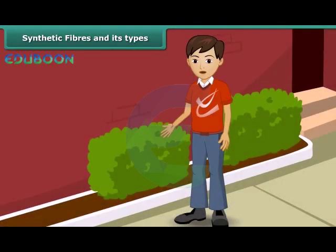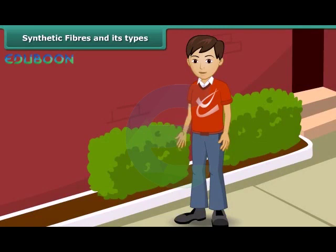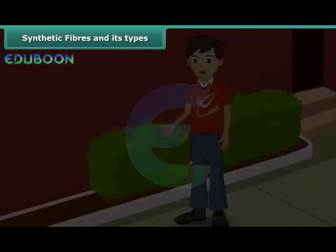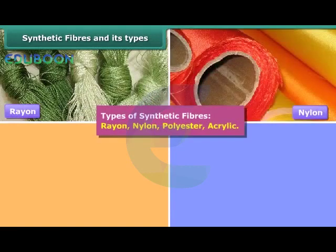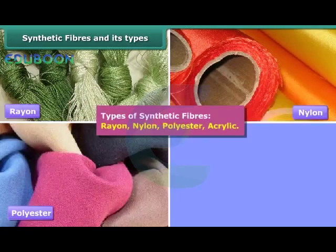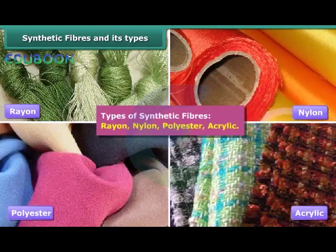Can you recall the various types of synthetic fibers which you use in your everyday life? Depending upon the types of chemicals used for manufacturing synthetic fibers, they are classified as rayon, nylon, polyester and acrylic.